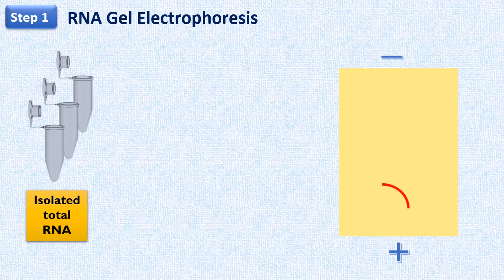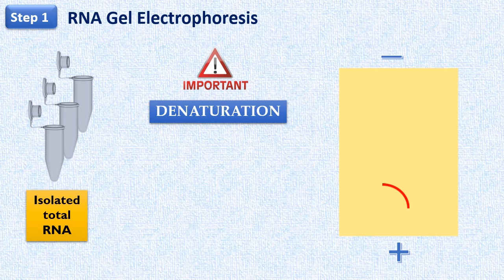Now we know that RNA is a single-stranded nucleic acid. But still, this RNA gel electrophoresis also includes the denaturation step. This is because RNA molecules fold onto themselves, and because of intramolecular base pairing, they form secondary structures.